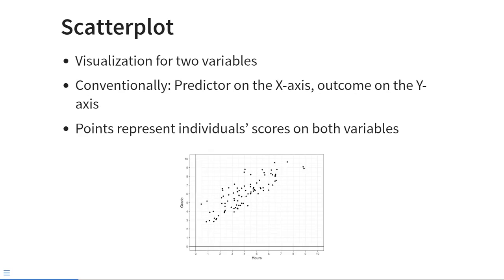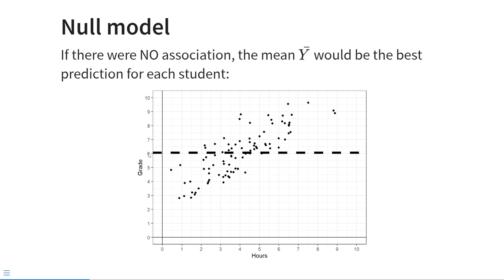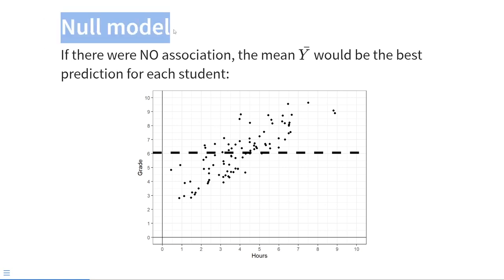Let's visualize the situation in a scatter plot. This figure at the bottom of the slide is a two-dimensional plot with the predictor on the x-axis and the outcome on the y-axis — that's conventional, and that's also why we call the outcome y and the predictor x. Each point represents an individual score on both variables; we have about 75 or 100 students with their scores on grade and hours studied. We can plot the mean value of the outcome — the dashed line here — the mean grade was 6.1. If there were no association between hours studied and grade, this mean value ȳ would be the best prediction for each student. We also call that the null model: the null model predicts the outcome from its mean value.